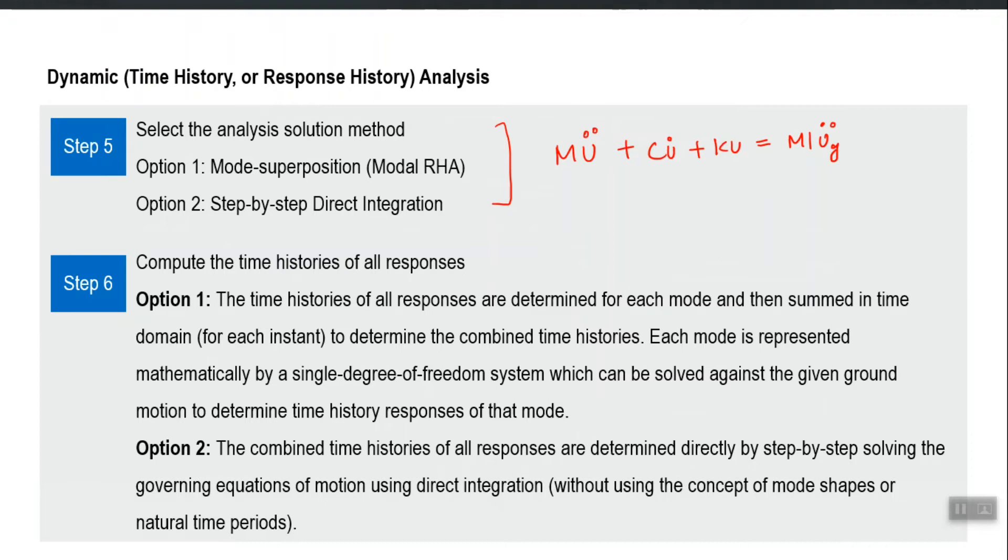Please remember all that uncoupling of the equation of motion orthogonality property. We uncouple the equation of motion and if it is like 10 by 10 degrees of freedom, we will get 10 uncoupled equations of motion, each of that will be equation of a single degree of freedom system.